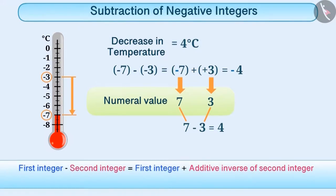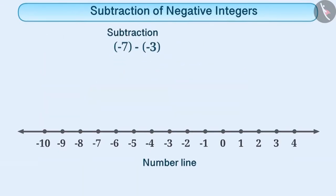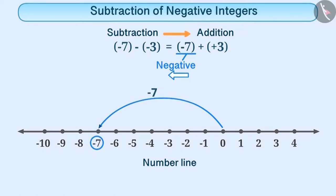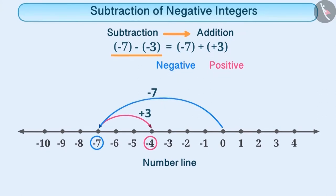We can also perform the subtraction of these numbers on the number line. Here also, we will convert the operation of subtraction into the operation of addition. That means, in the place of minus 7 minus minus 3, we will write minus 7 plus plus 3. Now, the first number is minus 7. Since this is a negative integer, we will move 7 steps to the left side of 0, and we will reach the number minus 7. The other number is plus 3. Since this is a positive integer, we will move 3 steps towards the right of minus 7. Thus, we reach minus 4, which is the result of the subtraction of minus 7 and minus 3.